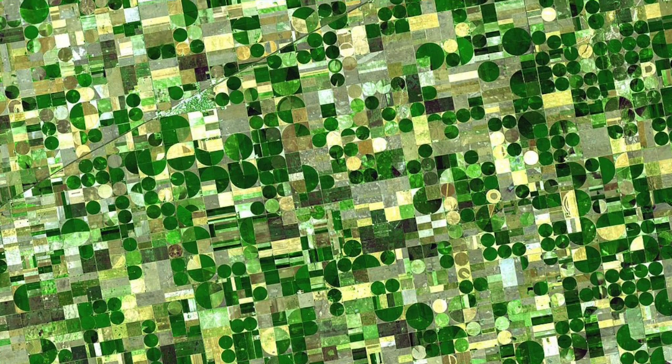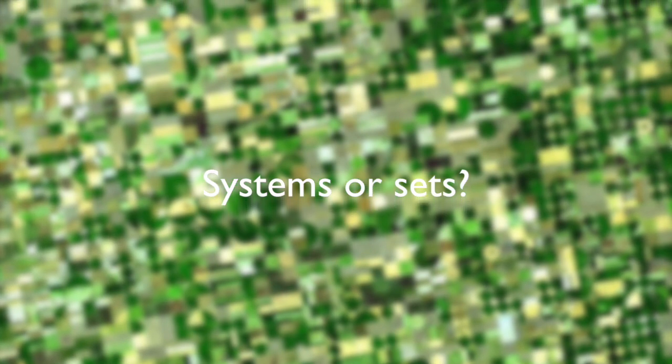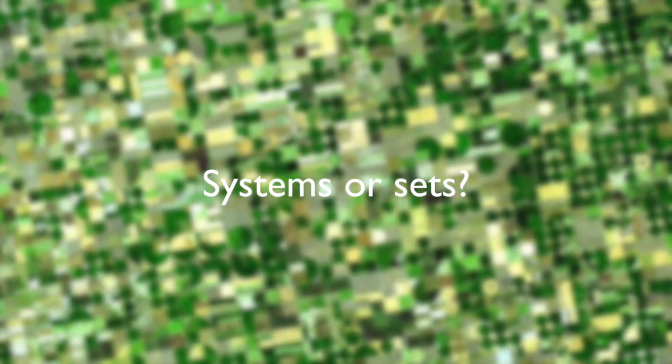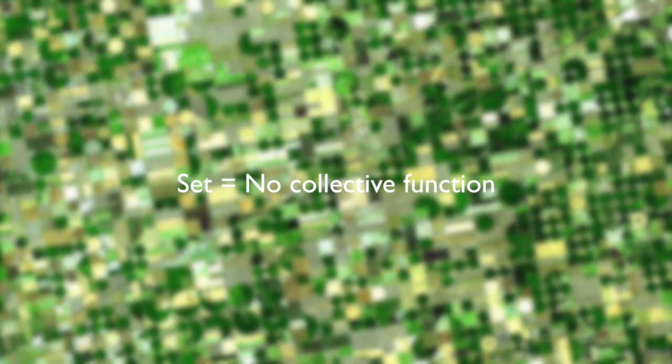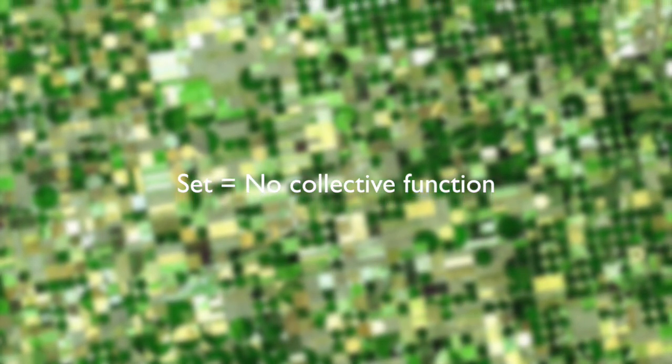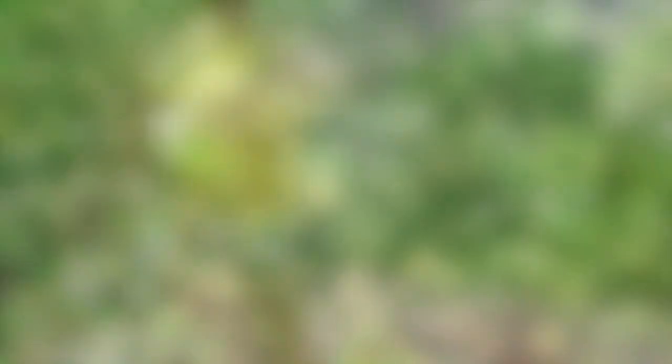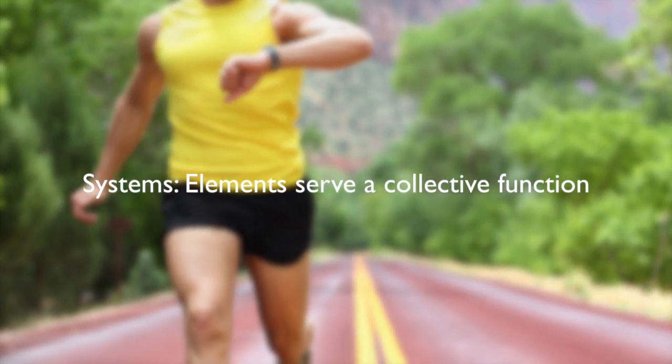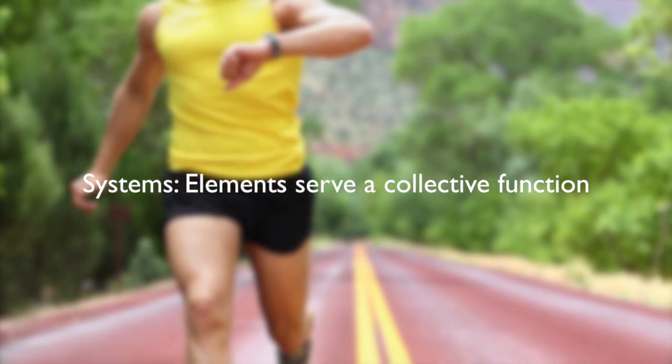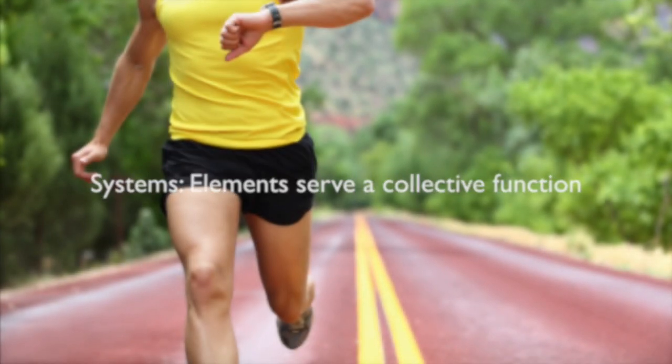Firstly, are we dealing with an actual system or simply a set of things? When we wish to talk about a composite entity, that is to say a group of things, we can describe it as either a set of objects or a system. The difference here being that a set is a group of objects that share no common function. Thus, we call a group of cups on a table a set of cups, as they exist independently from each other. In contrast, if we take the human body, it is a composite entity, but this time the elements have been designed to serve some common function and thus we can call it a system, and we need to use systems thinking to properly understand it.